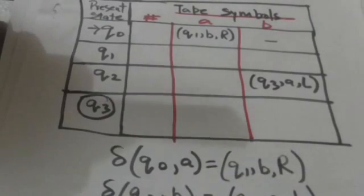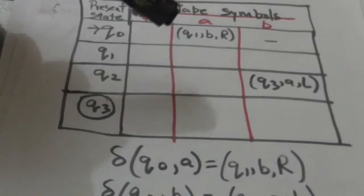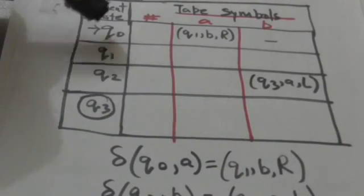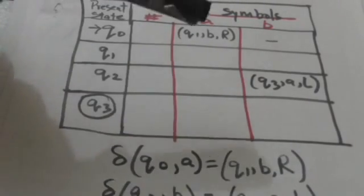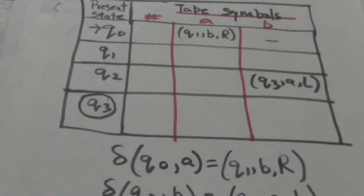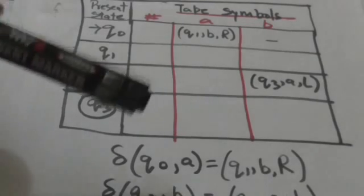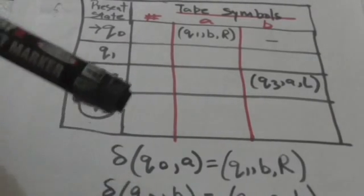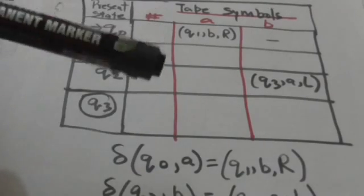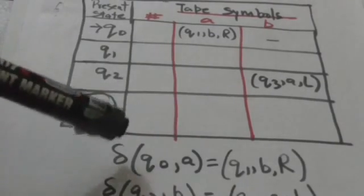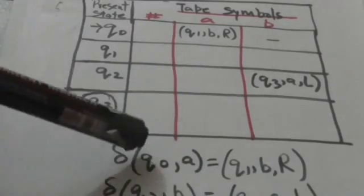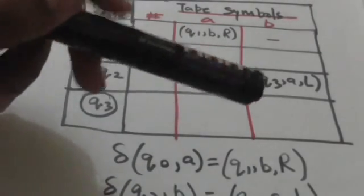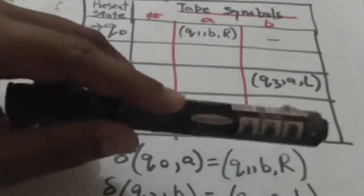The entry of the table will be the output of the transition function for the state labeling the row and the tape symbol labeling the column. For example, the output of the transition function for state Q0 and tape symbol A is Q1, B, R.